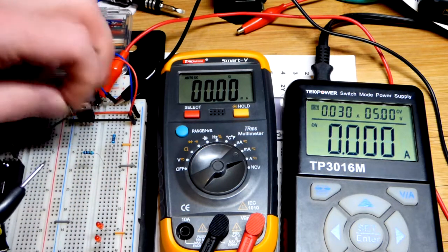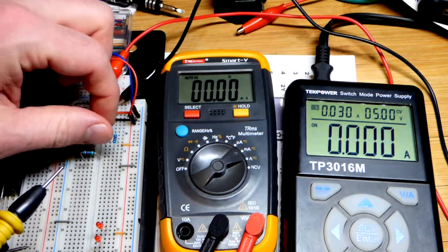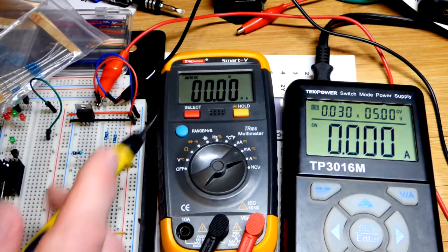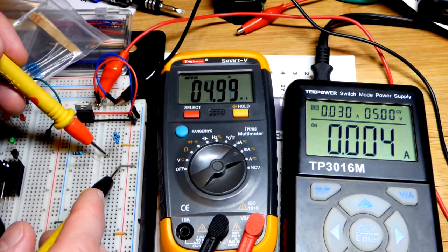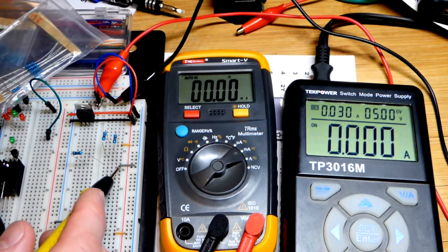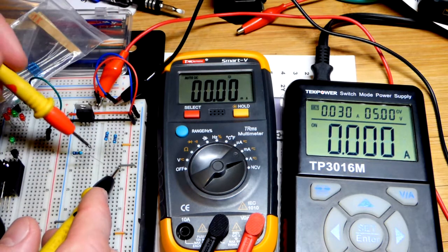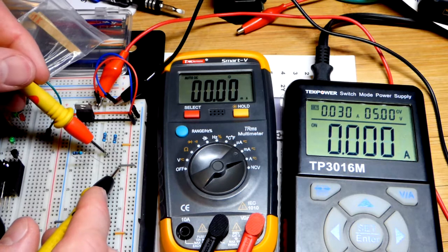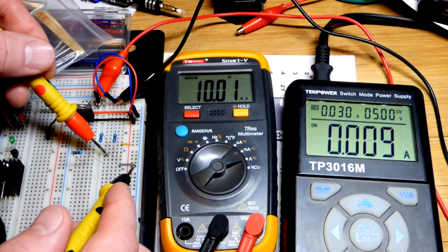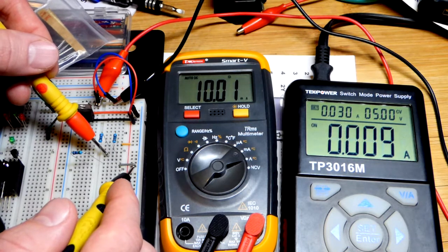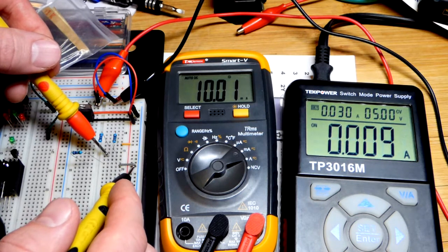So now I'm going to take the other one kilo ohm resistor right there, put it in parallel. And now we had that current 5 milliamps going through. Now that we have two in parallel, I must have missed a row. So that's the problem right there. Always check your wiring when you don't get the readings you expect. So now they're both on the same row. And now we have 10 milliamps of current. So 10 milliamps of current with the two of them.